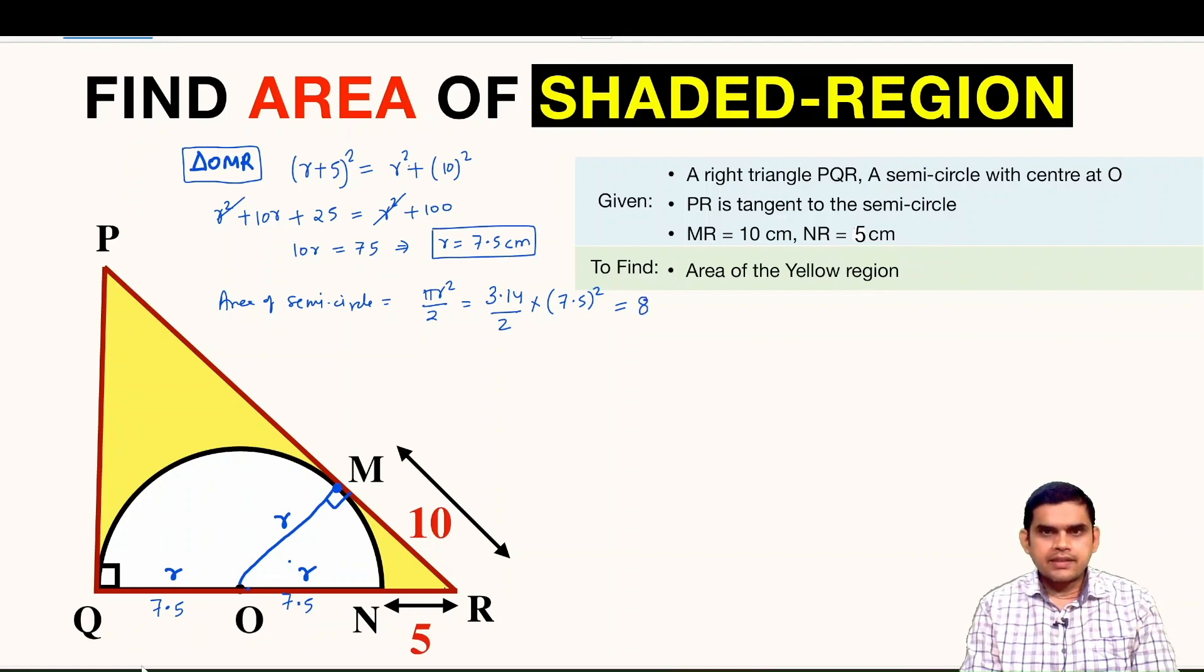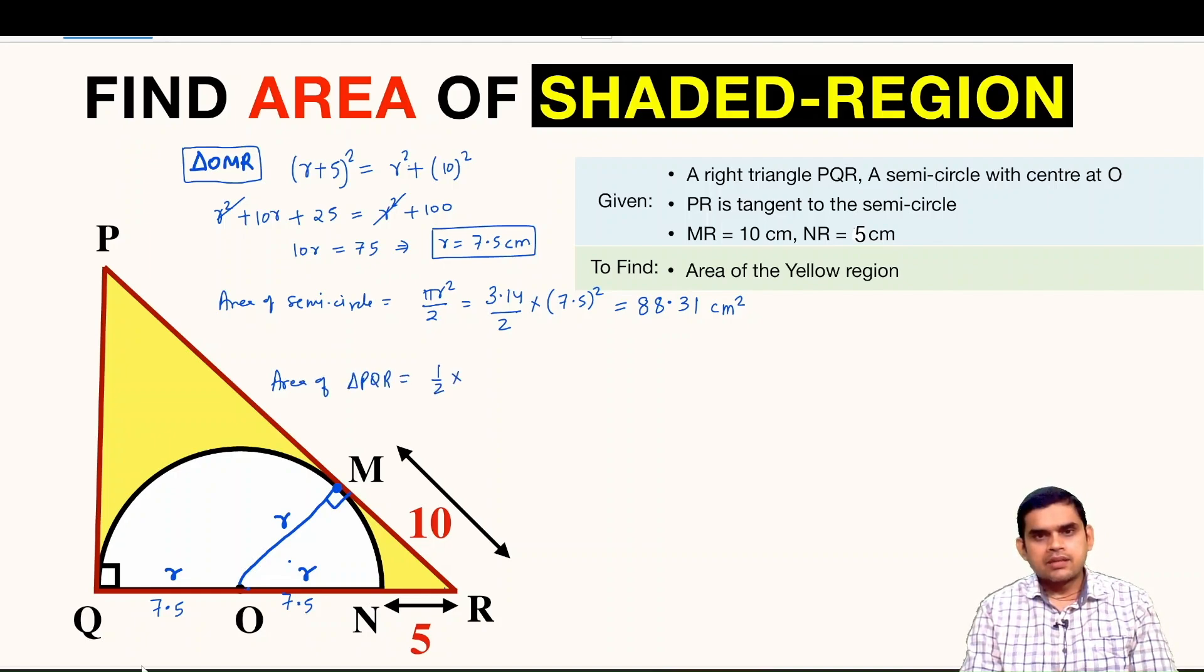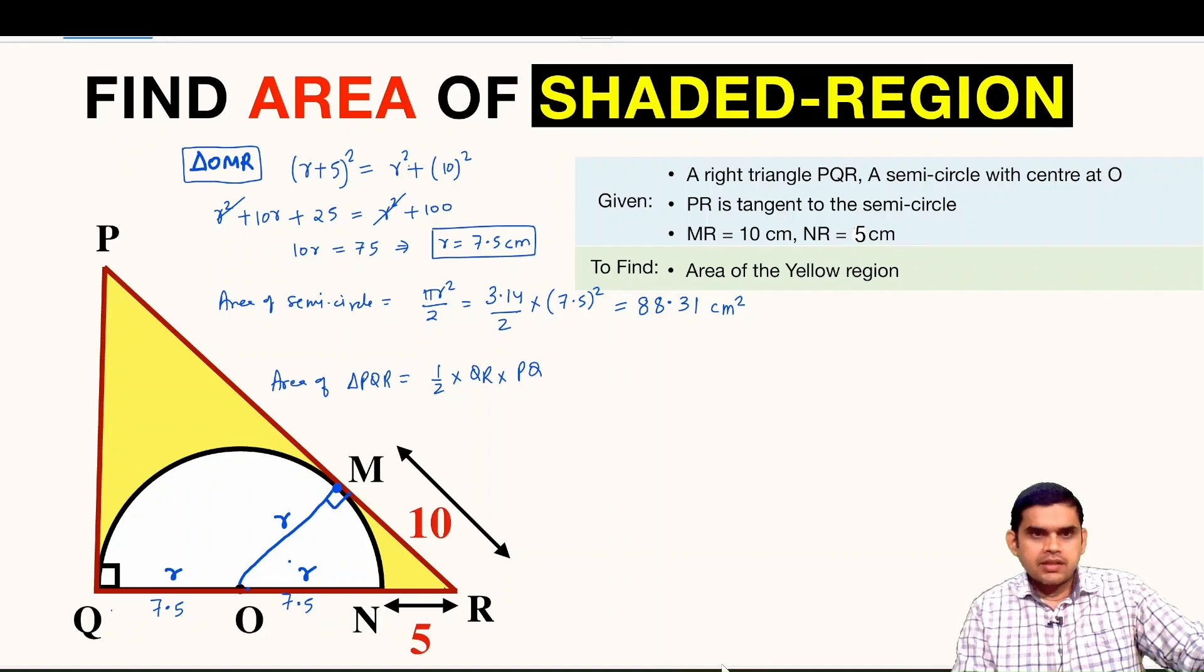And if we compute this we will get 88.31 centimeter square. So we have successfully found the area of this semicircle. Now we are interested in finding area of this triangle PQR. Area of triangle PQR will be half times the length QR times the altitude.